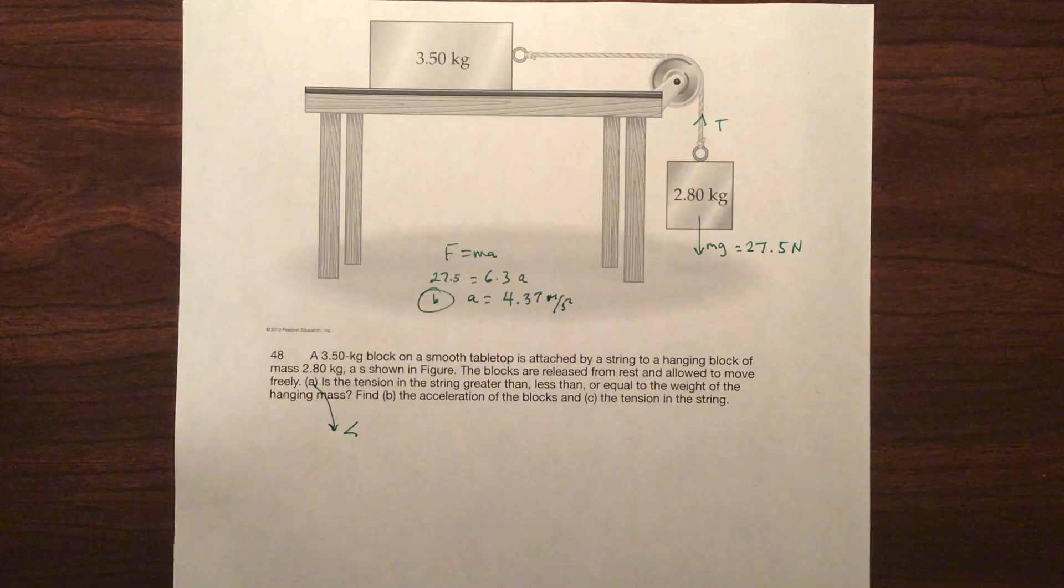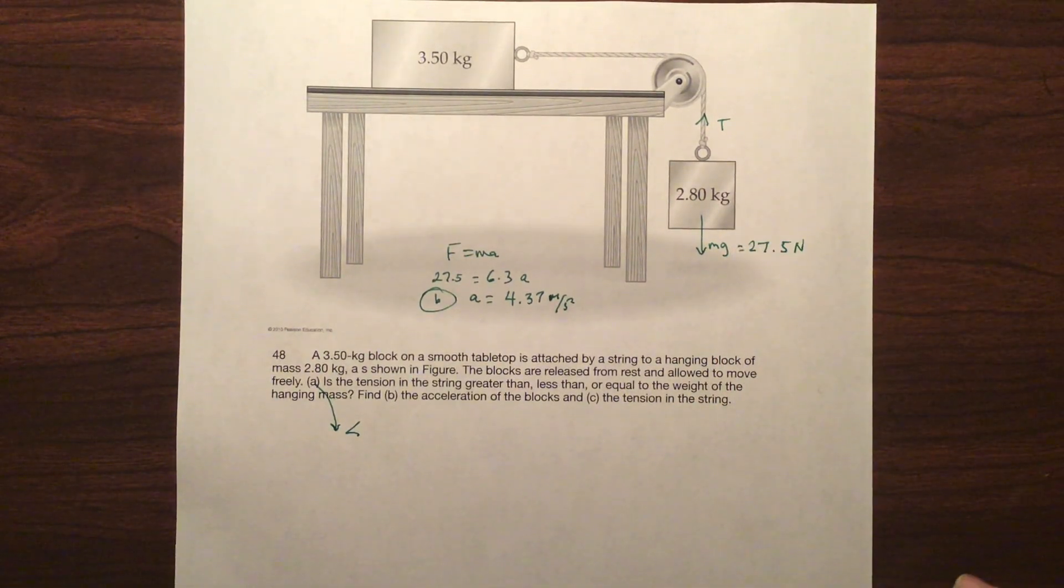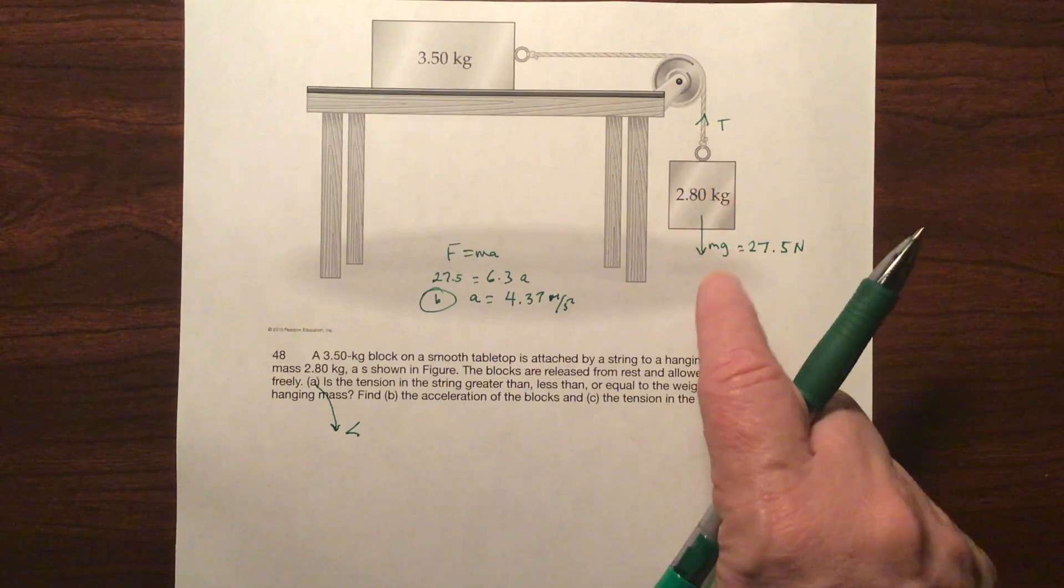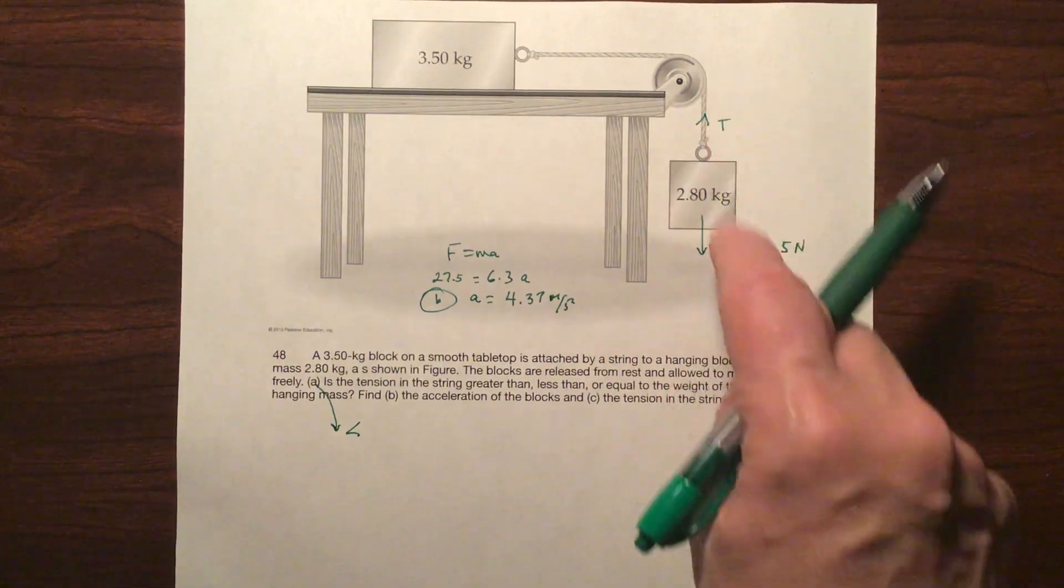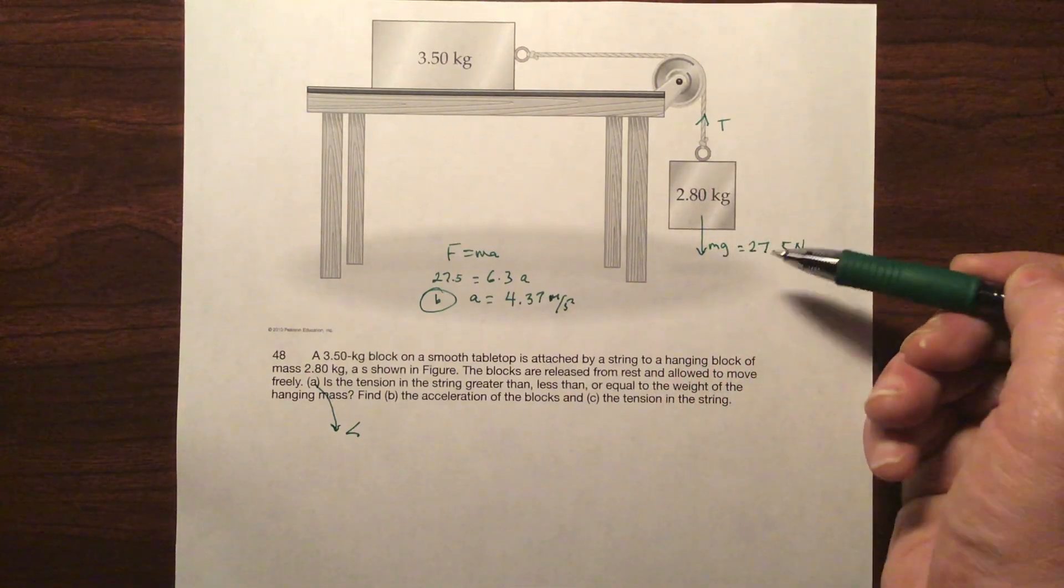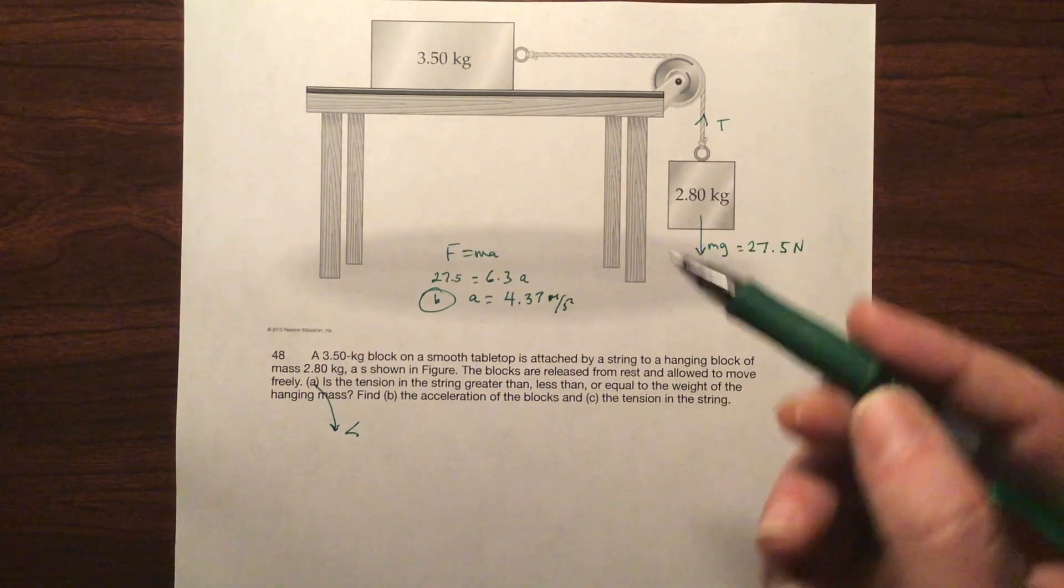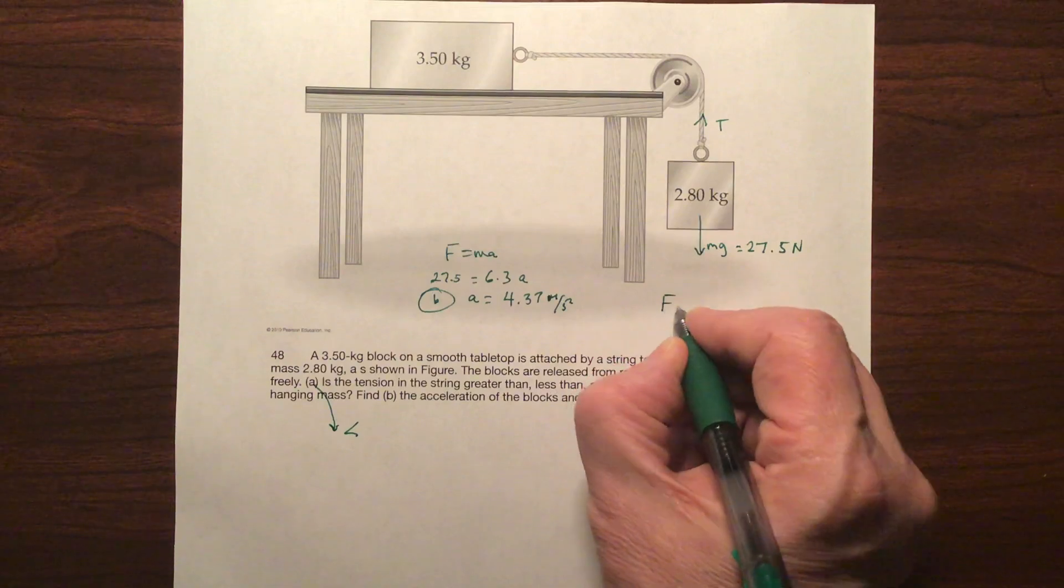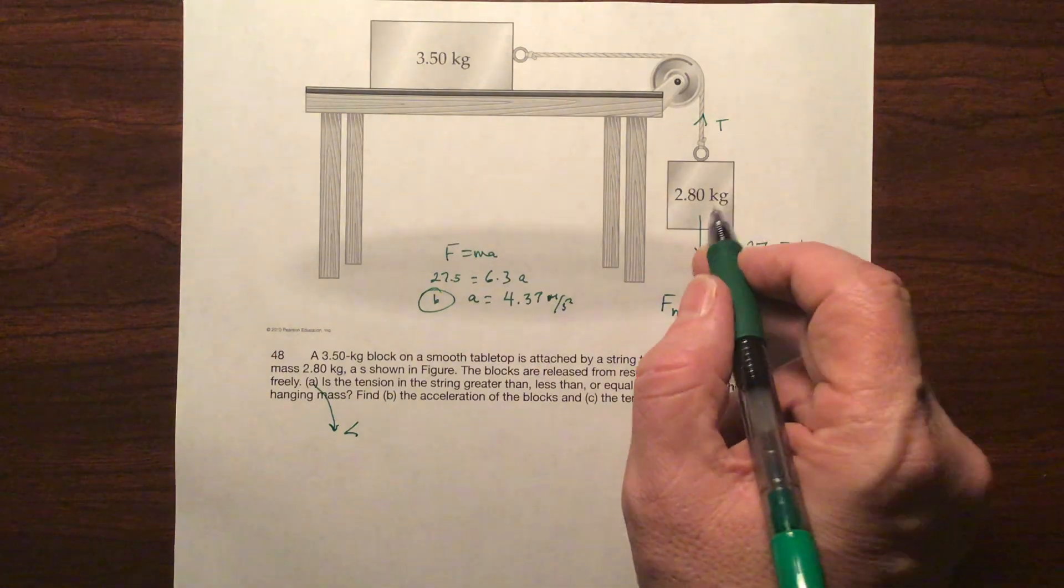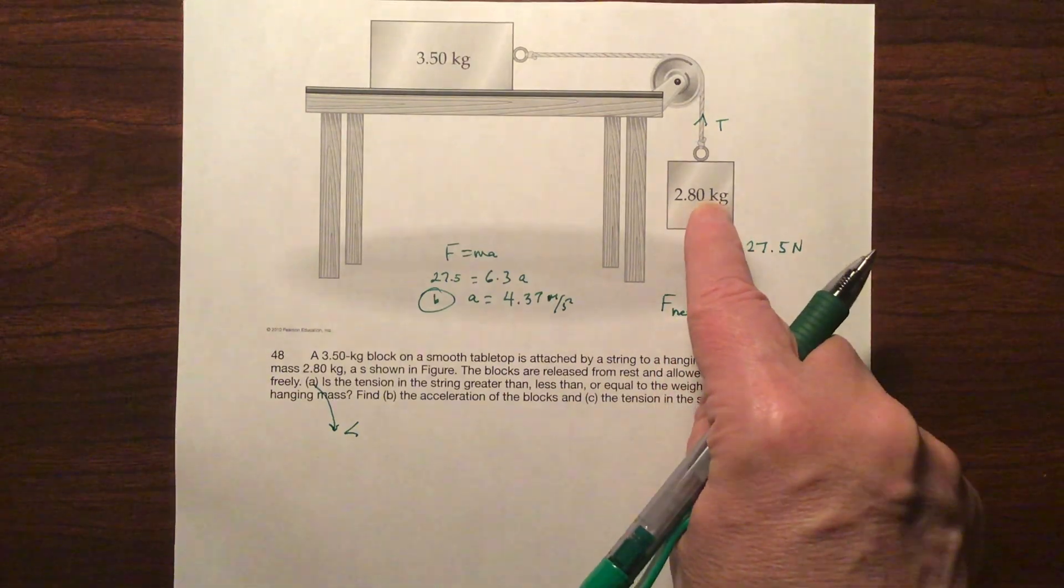And now C is wanting the tension in the string. So we want this tension. Well, obviously, it's not equal. Otherwise, this would be stopped. We know the acceleration. So we know that this force is moving down. I'm not interested yet in this. I'm only interested in this for the moment. So if I were to do the net force, so the net force is going to be 27.5 minus T. I'm going to need to do that. So what is the net force? The total force that's making this move is going to be this weight, mass, times this acceleration. This mass times this acceleration is this net force that's making this move.